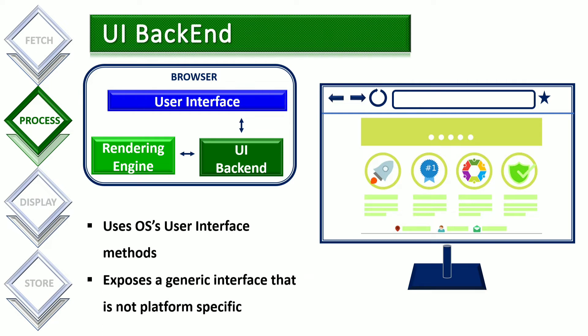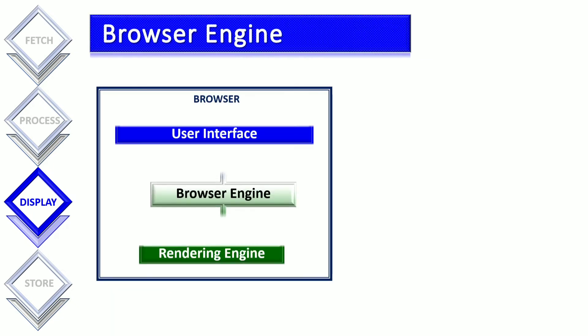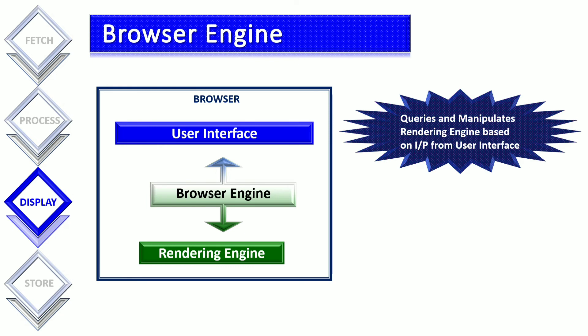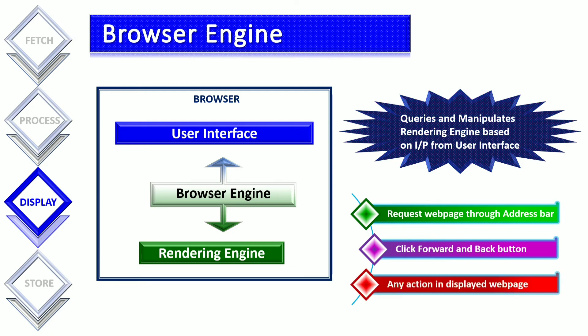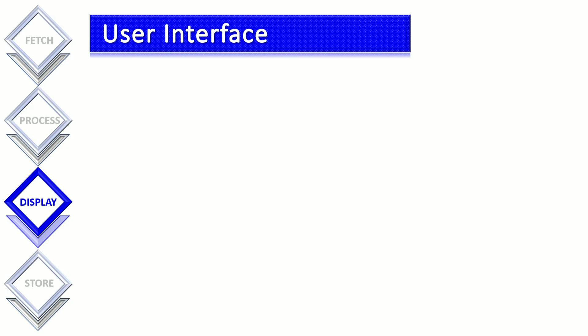There are two components in the browser responsible for displaying the content. The first is the browser engine, which commands the actions between the user interface and the rendering engine. It queries and manipulates the rendering engine according to input from the user interface. That input can be requesting a web page through the address bar, clicking the forward and backward buttons, or any actions happening in the displayed web page.